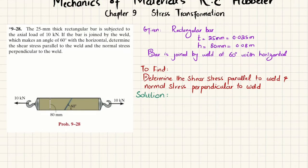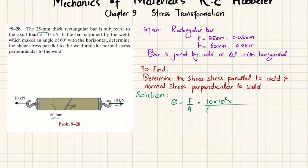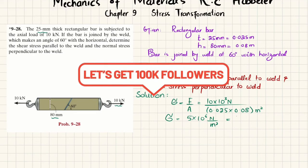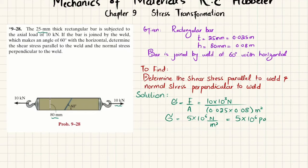Let's start with the solution. The first step: since we have a 10 kilonewton axial load, we'll find the axial stress. Axial stress equals force per unit area. Force is 10 kilonewtons, so 10 × 10³ newtons. The area it acts on is 80 mm × 25 mm, converting to meters: 0.025 m × 0.08 m = 0.002 m². Solving gives 5 × 10⁶ N/m², which is 5 × 10⁶ pascals.